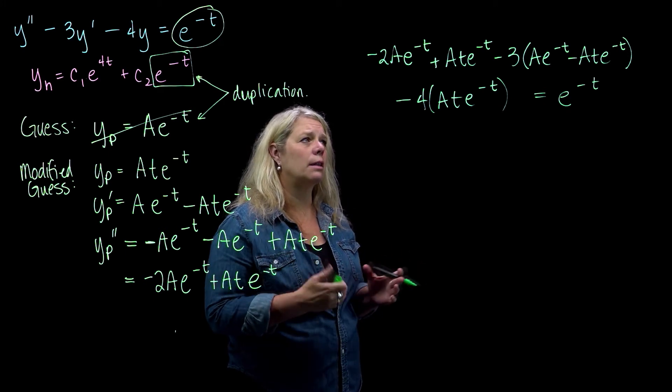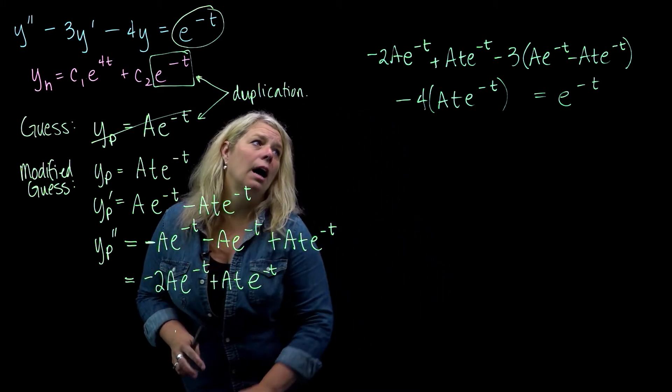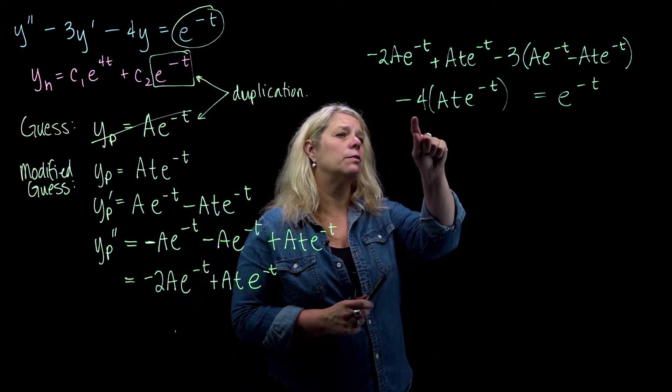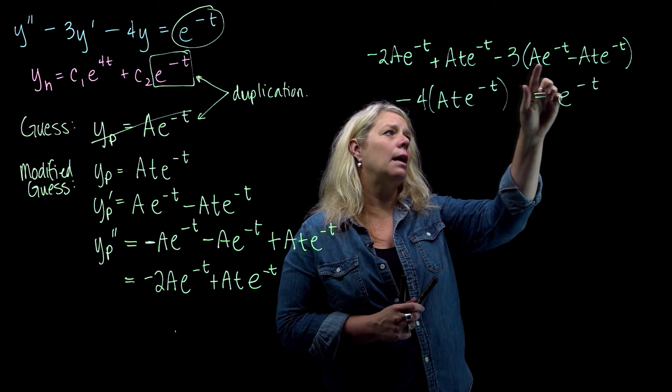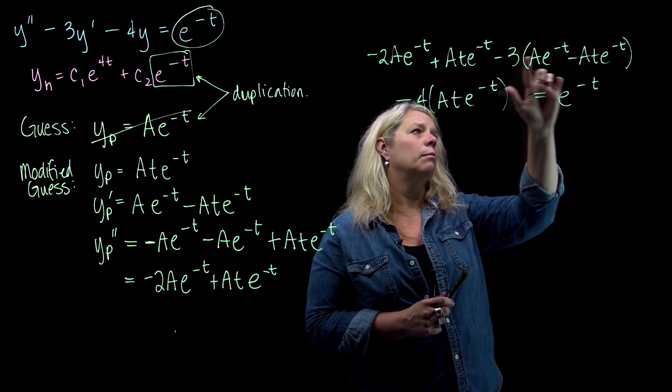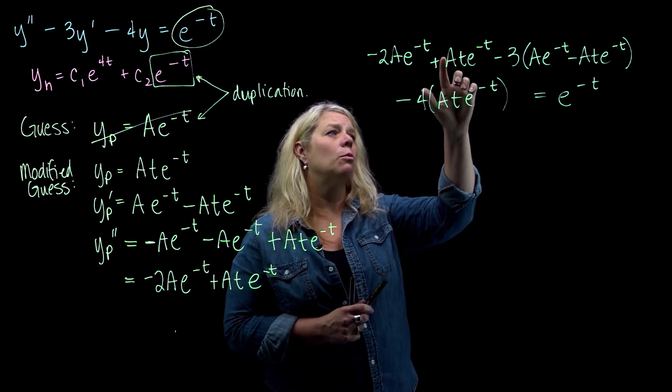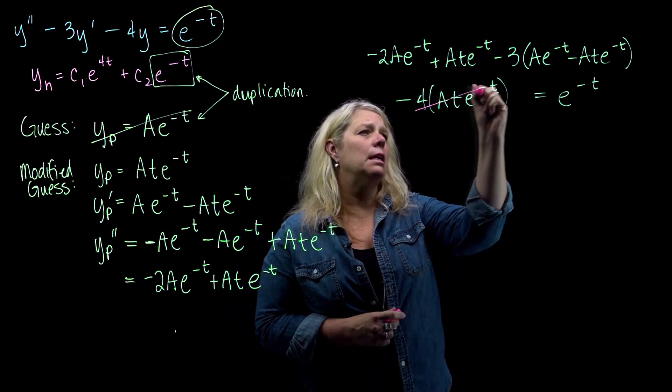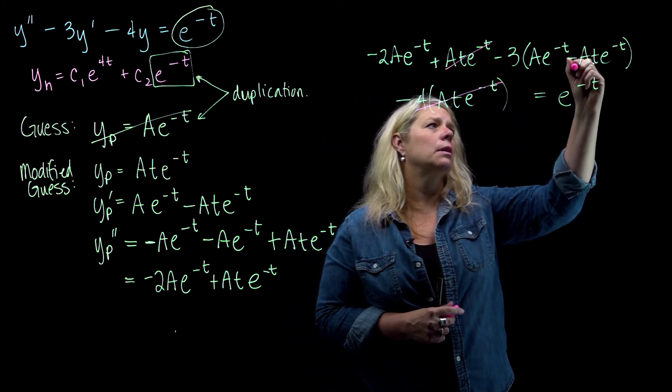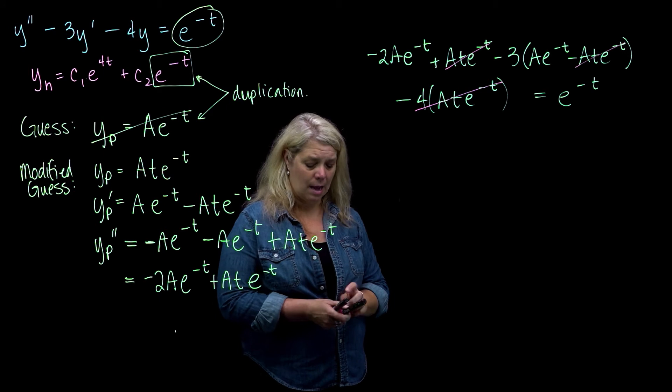Perhaps you might notice that there are some terms that cancel. I've got a minus 4A t e to the negative t, and a plus 3, plus 3A t e to the negative t, and a plus 1A t e to the negative t. So, my t e to the negative t terms will all add up to 0 on that left side.